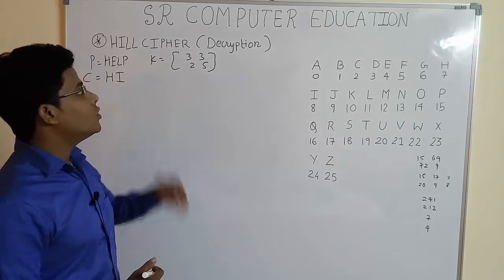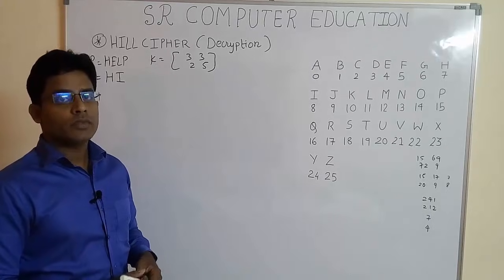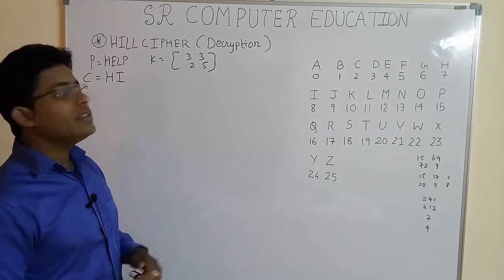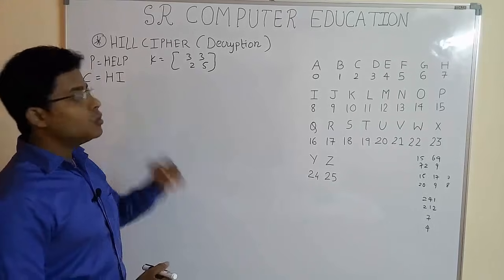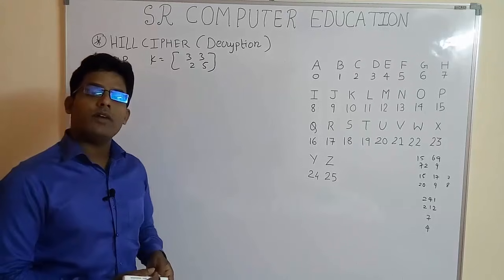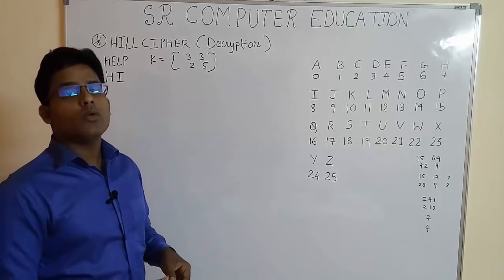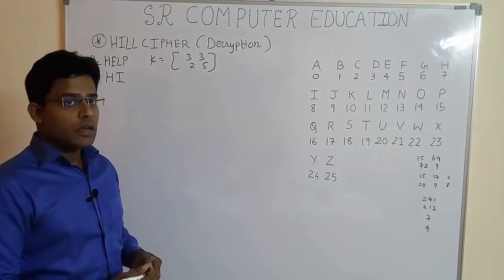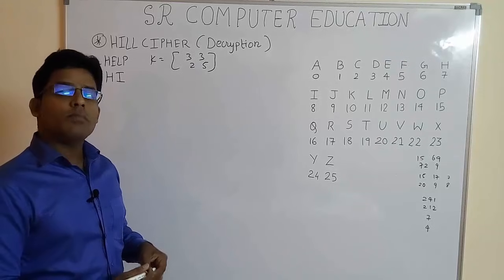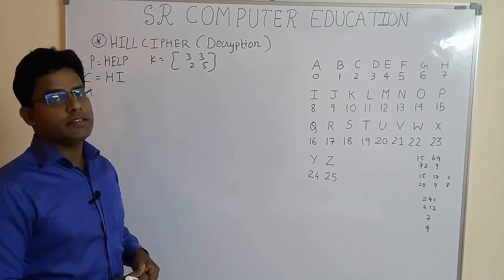Now in this video, we are going to see how to do the decryption and find the plain text using cipher text when the given key matrix is 2x2. Decryption is the part where students face more difficulty as compared to encryption. I am going to explain you in a very simple way how to do decryption using hill cipher.